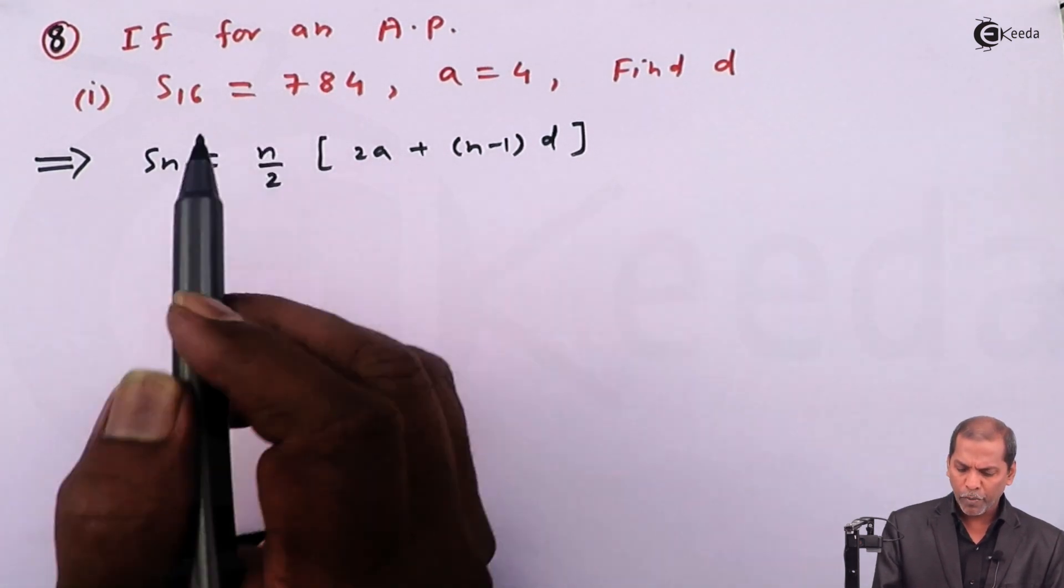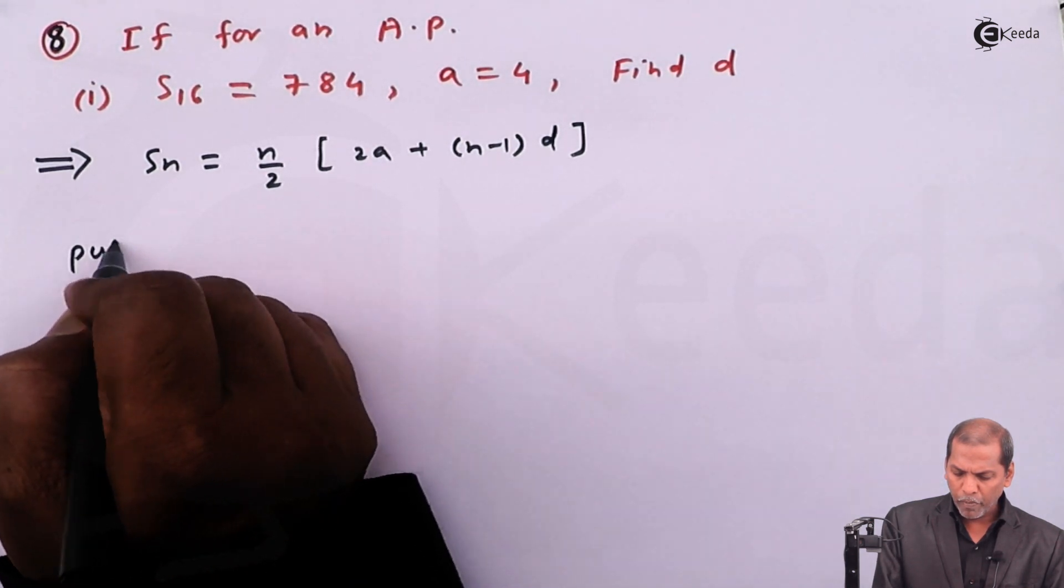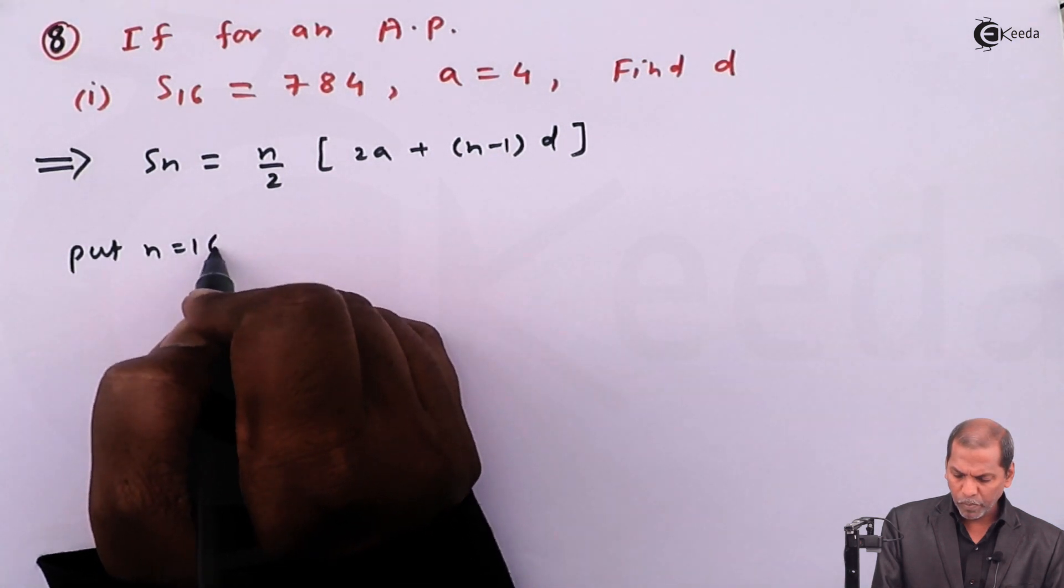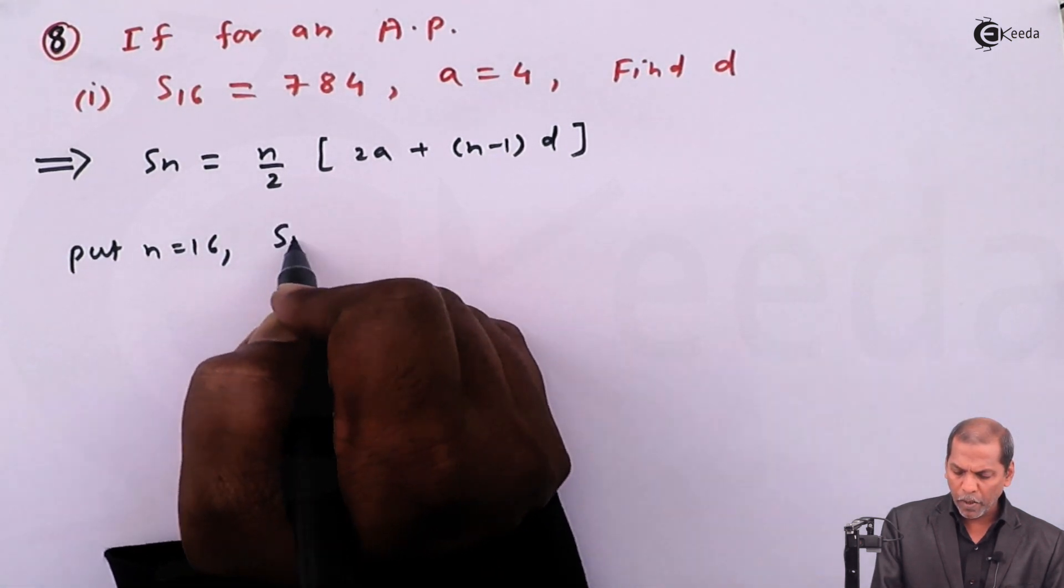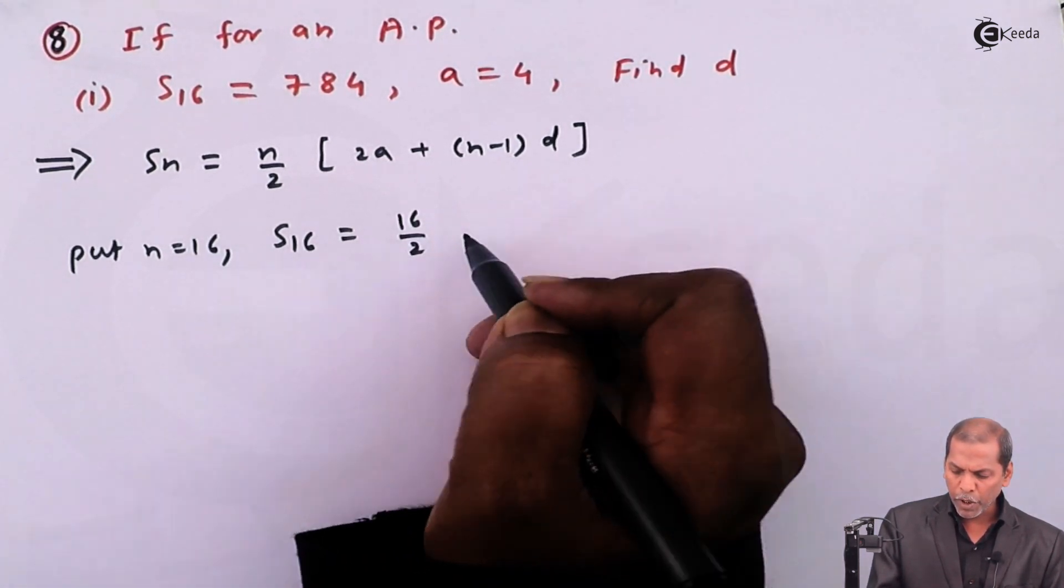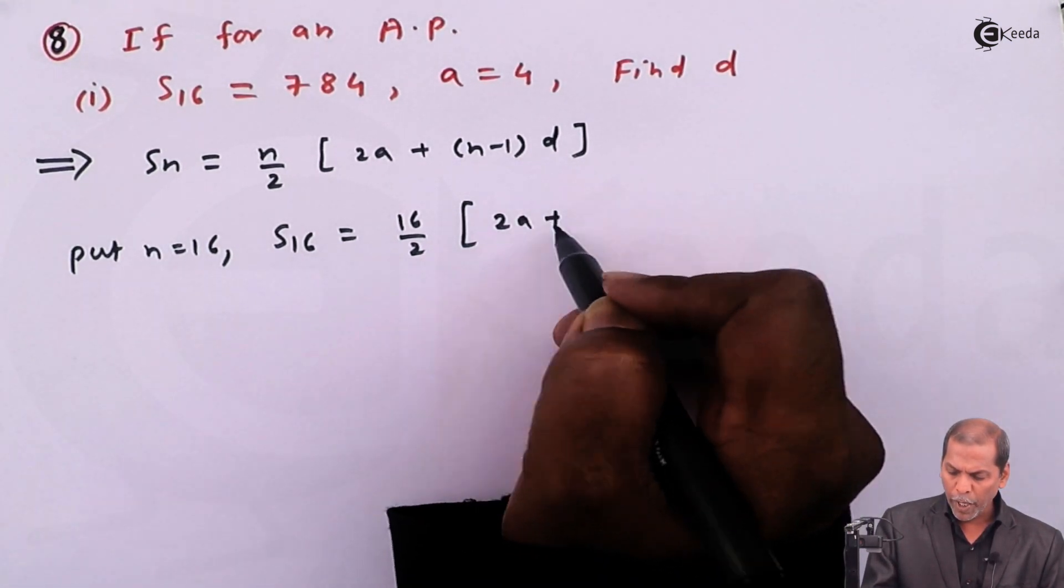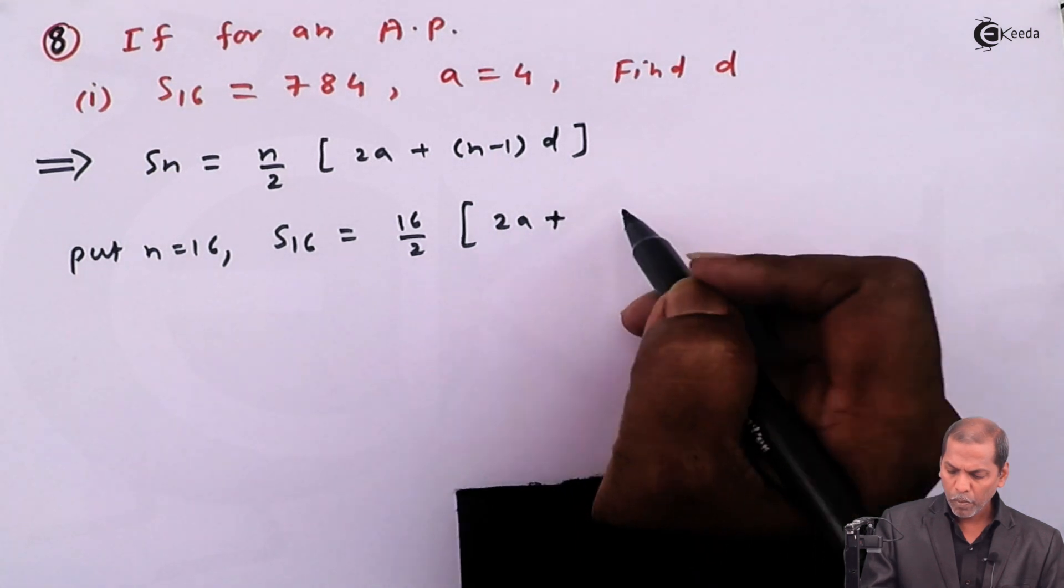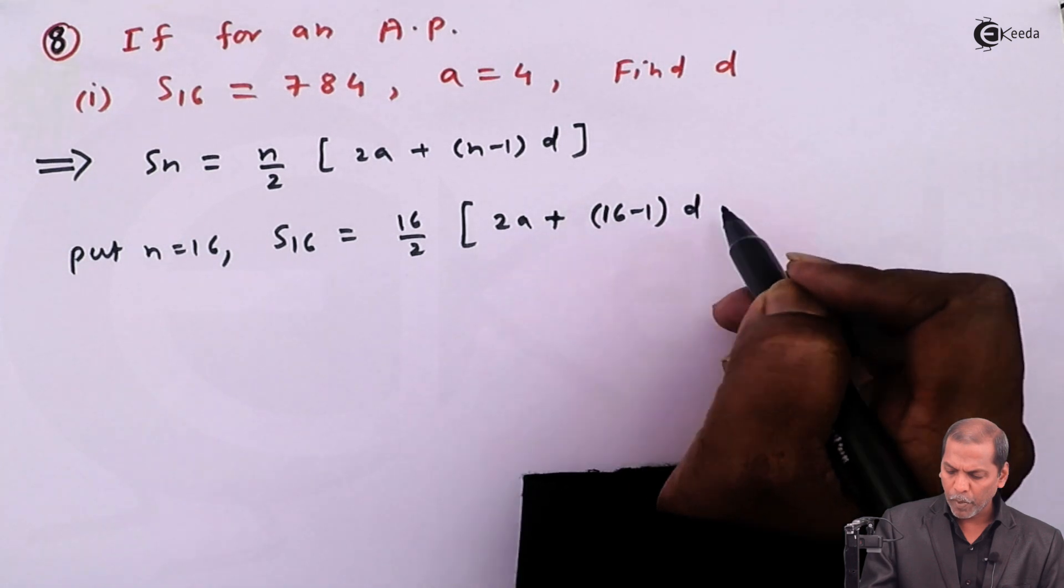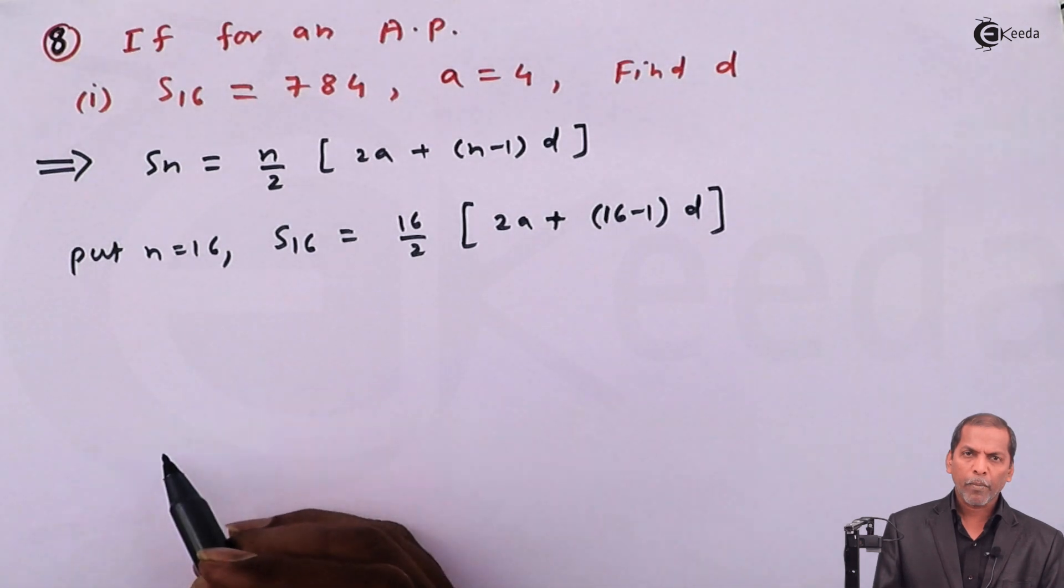So we put n equal to 16. We get S16 is equal to 16 upon 2 in bracket 2a plus, another bracket, 16 minus 1, bracket complete, into d, and then square bracket complete.